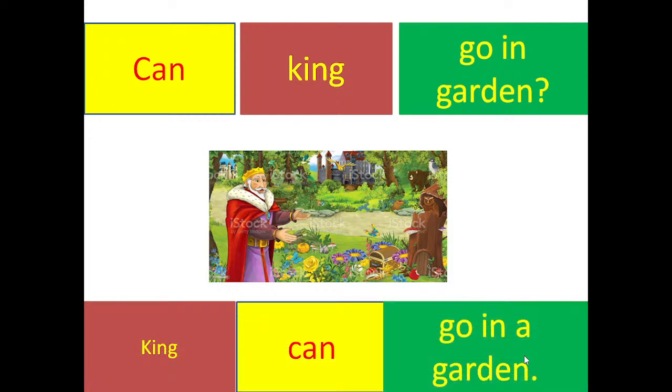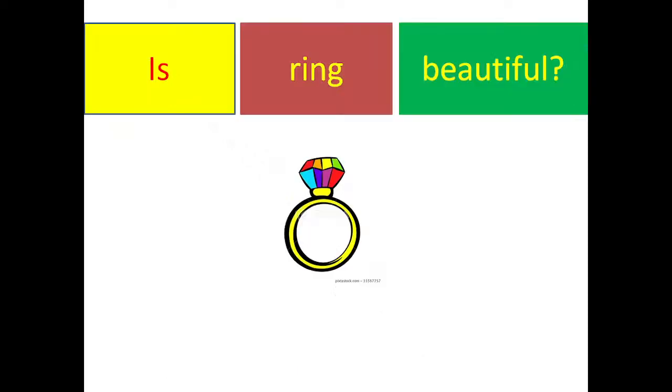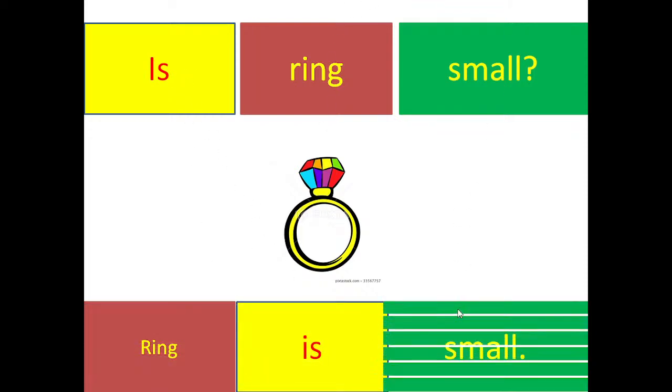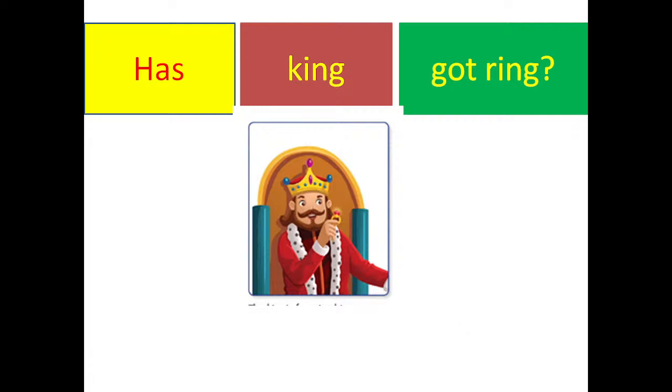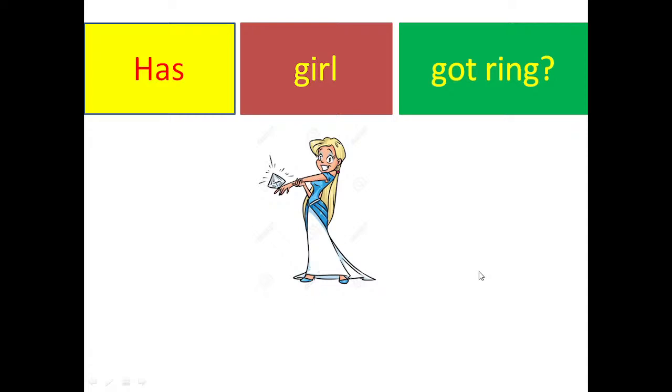Next word: ring, ring, ring. Let's practice together: ring. Answer the questions. Is ring beautiful? Yes, ring is beautiful. Is ring small? Ring is small. Has king got ring? Yes, king has got ring. Has girl got ring? Girl has got ring.